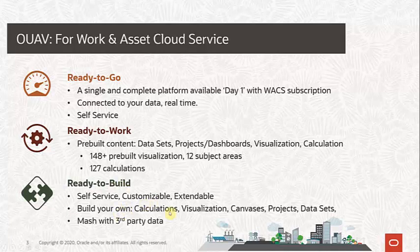Apart from the out-of-the-box datasets and subject areas, OUAV also has the flexibility to mash up with third-party data. For example, you can upload an Excel file — if you have assets maintained in other systems, you can download that data into Excel, upload it to OUAV, match the asset ID with our subject areas, and combine both datasets to create a visualization. You also have the flexibility to create your own custom datasets and write your own queries, then use those as part of your visualizations.